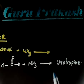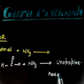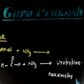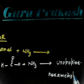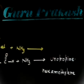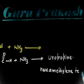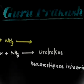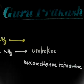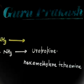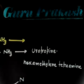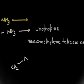Urotropine is basically hexamethylenetetramine. The structure is something like this: you have nitrogen, you have CH2. This is something like benzene, so you have to remember the structure.